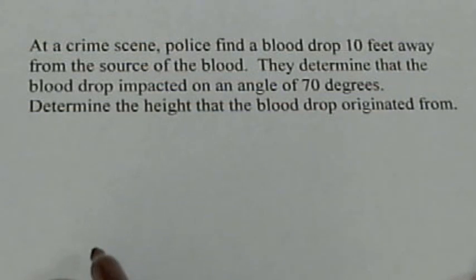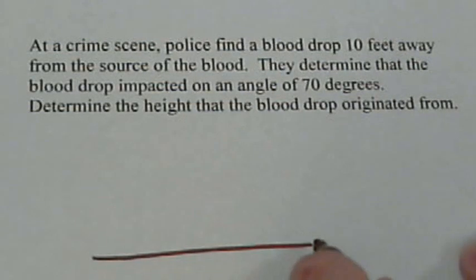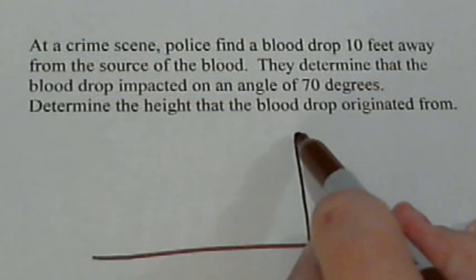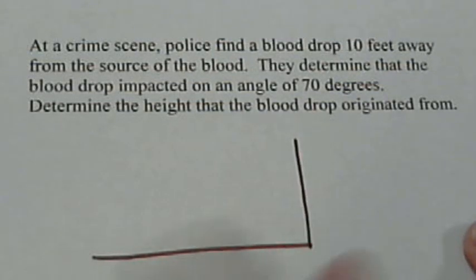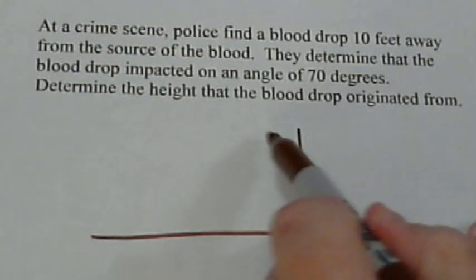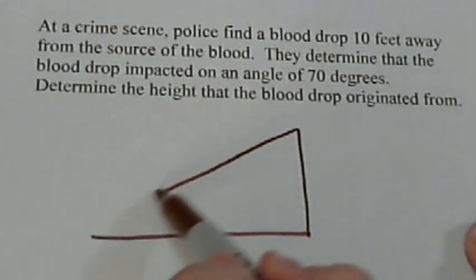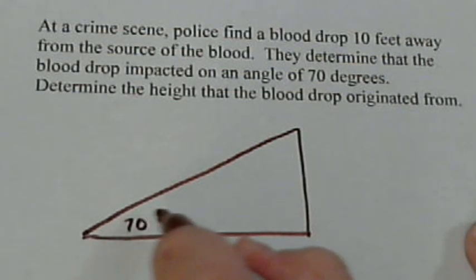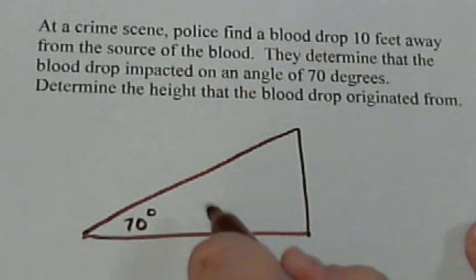So let's draw a little sketch of this picture. We've got the ground here. This distance represents where the blood was in relation to the ground, so how high up it was. And we said it came in at an angle of 70 degrees. So that's a 70 degree angle.